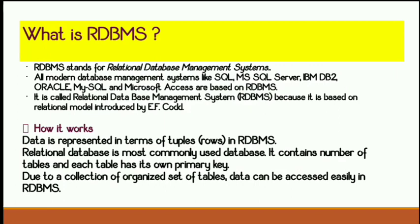Data is always represented in terms of rows, also called tuples. Relational Database is the most commonly used database throughout the world. It contains a number of tables, and each table has its own primary key — a unique key assigned to every table. Due to the collection of organized tables, data can be accessed easily in RDBMS. Each table has rows, columns, and a primary key.